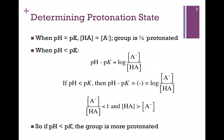Let's look at a general rule that will tell us whether or not a group is more or less protonated. Remember the general principle: if pH equals pKa, we know that the acid and conjugate base forms are equal — that is, the group is half protonated and half unprotonated. What about if the pH is less than pKa?